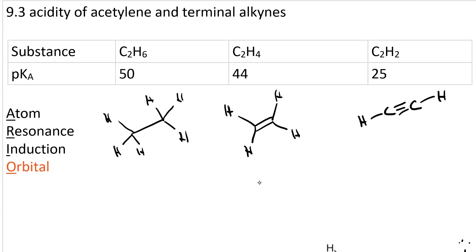If you look at the pKa values for ethane, ethene, and ethyne, here's ethane with no pi bonds, ethene with one double bond, and ethyne with a triple bond.